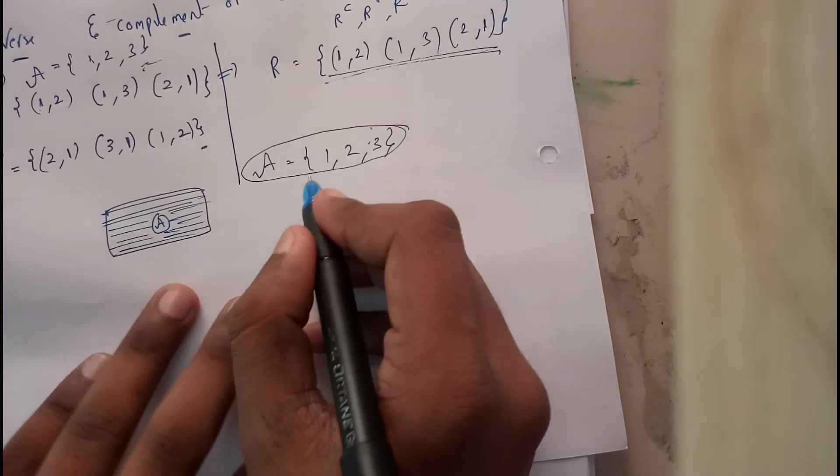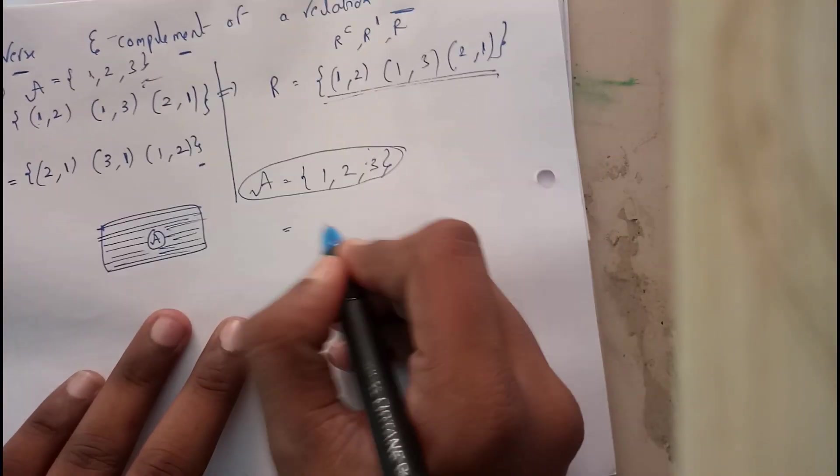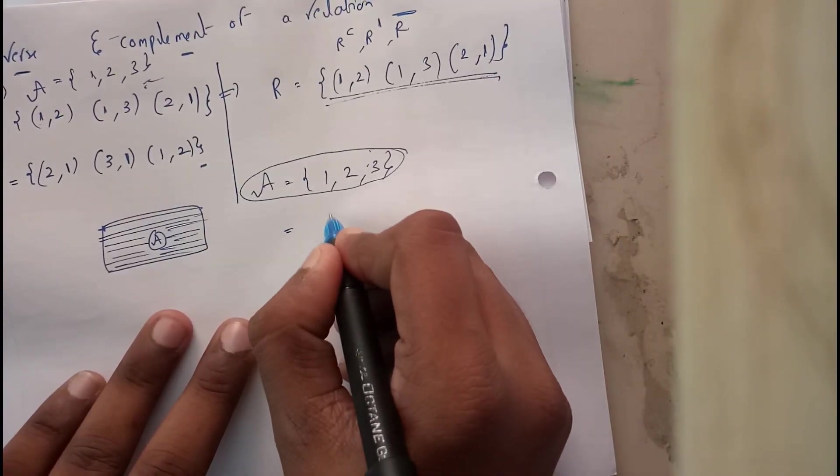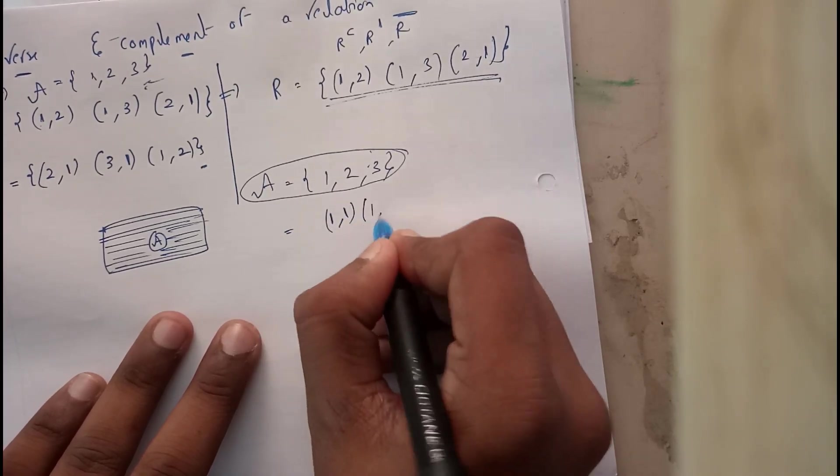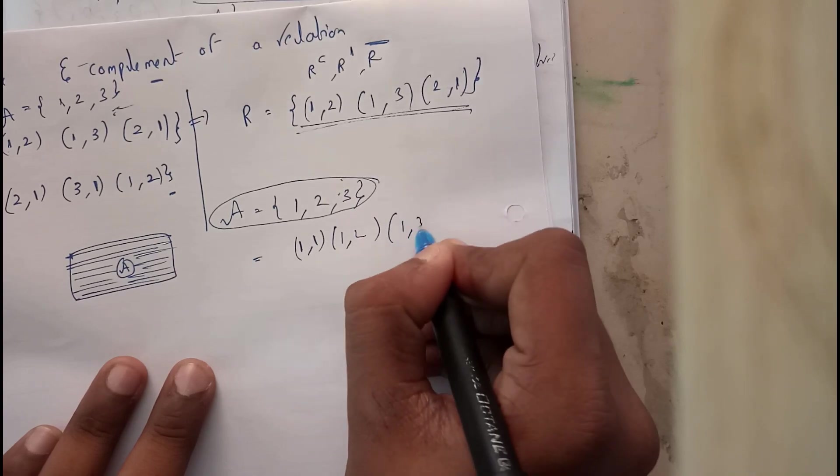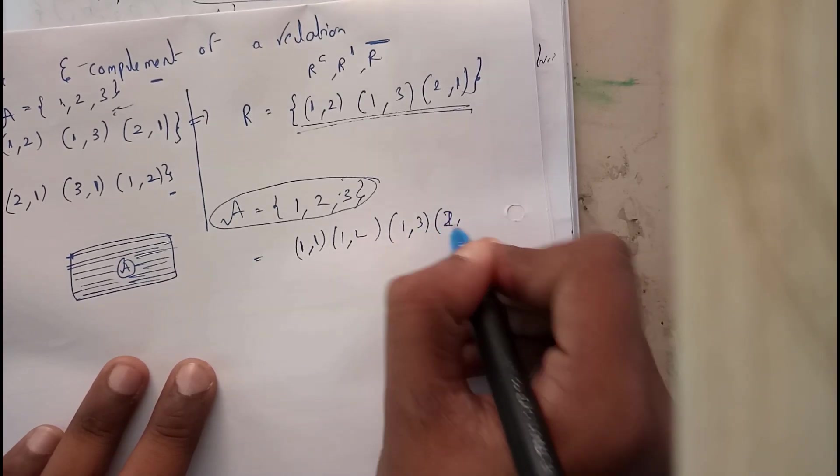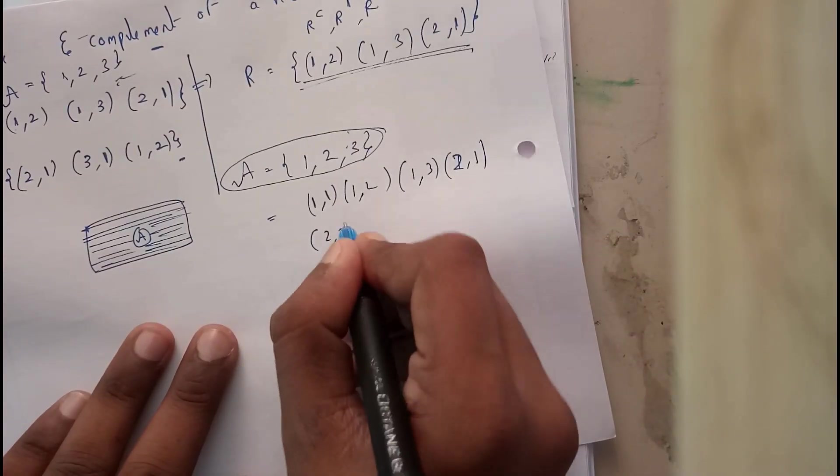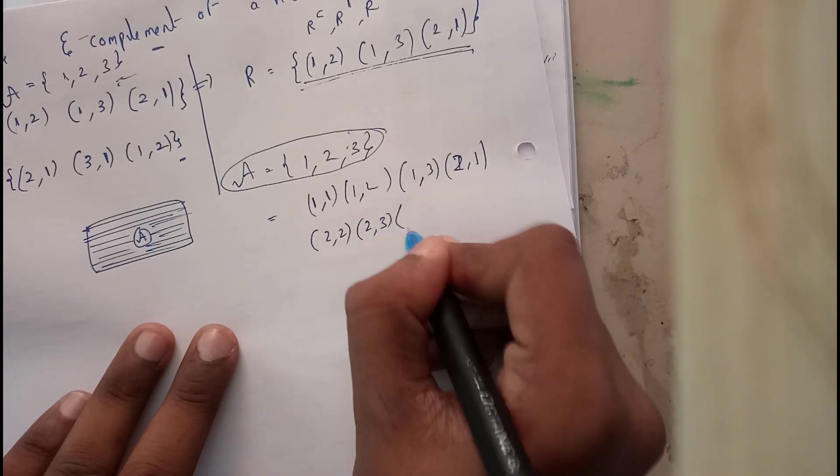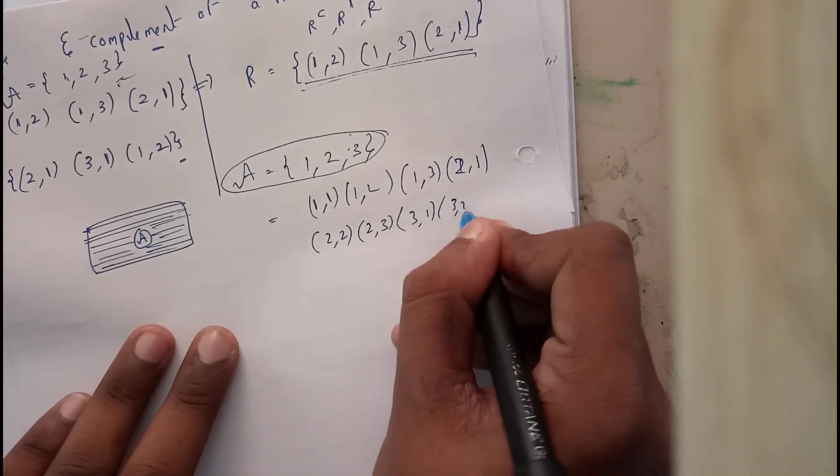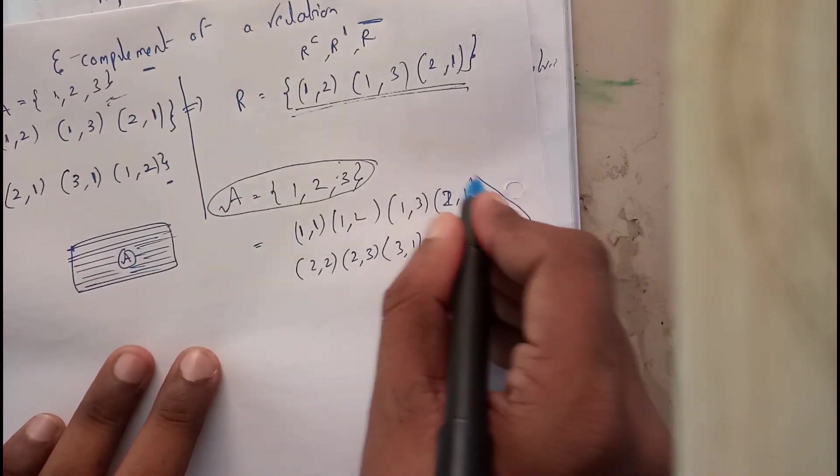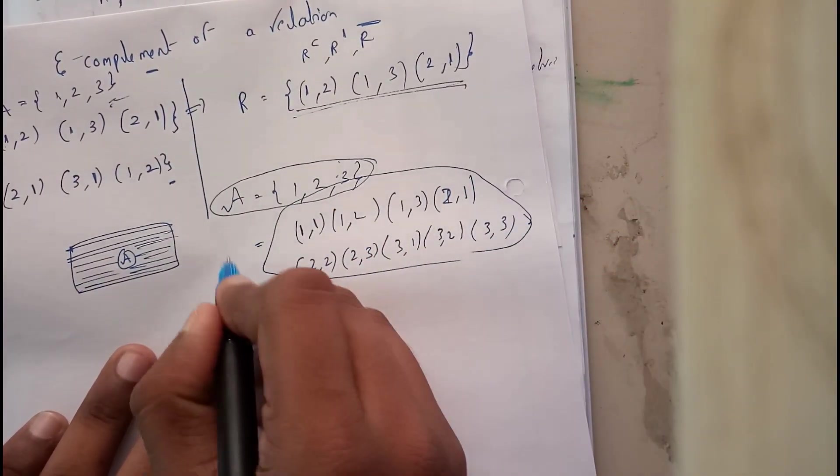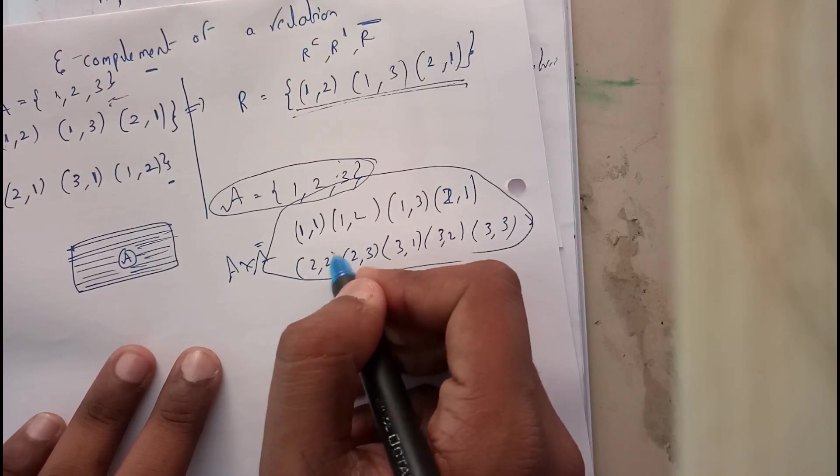We'll be getting where (1,1) is possible, (1,2) is possible, (1,3) is possible, (2,1) is possible, (2,2) is possible, (2,3) is possible, (3,1), (3,2), and (3,3). These are all the possibilities for cartesian product A cross A.